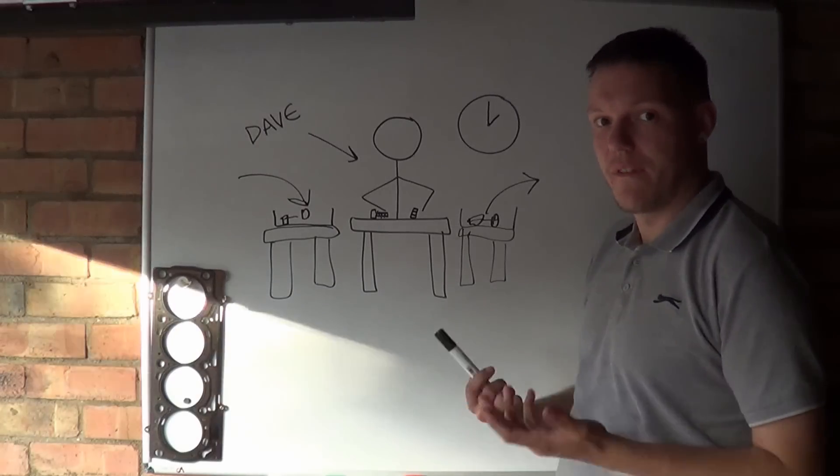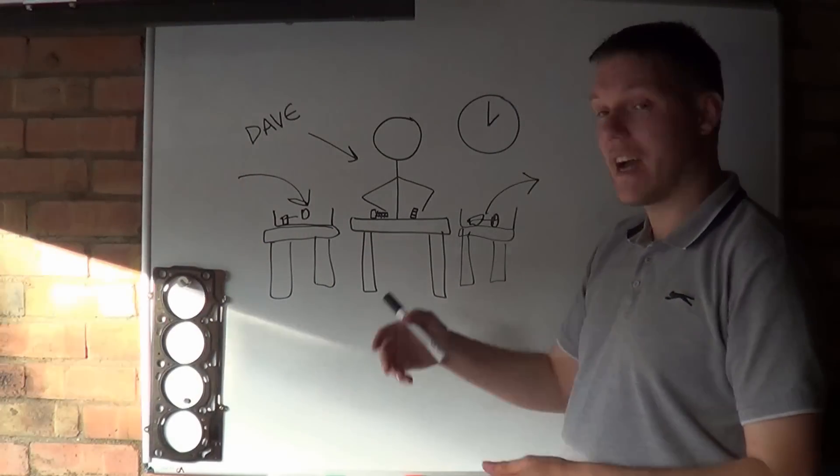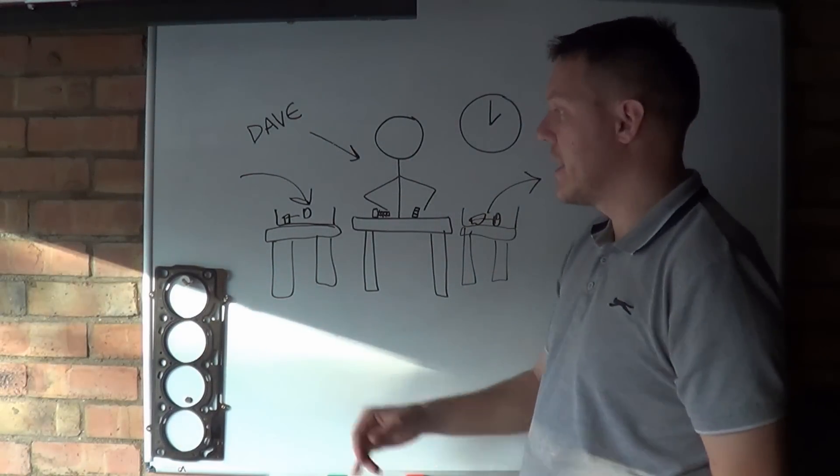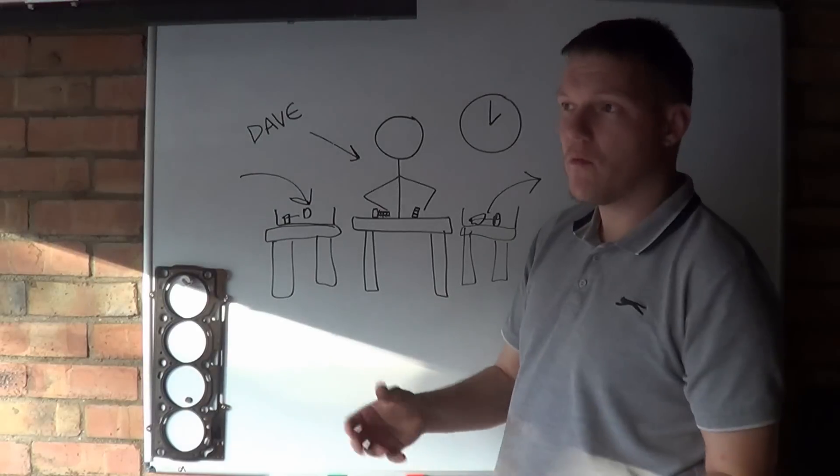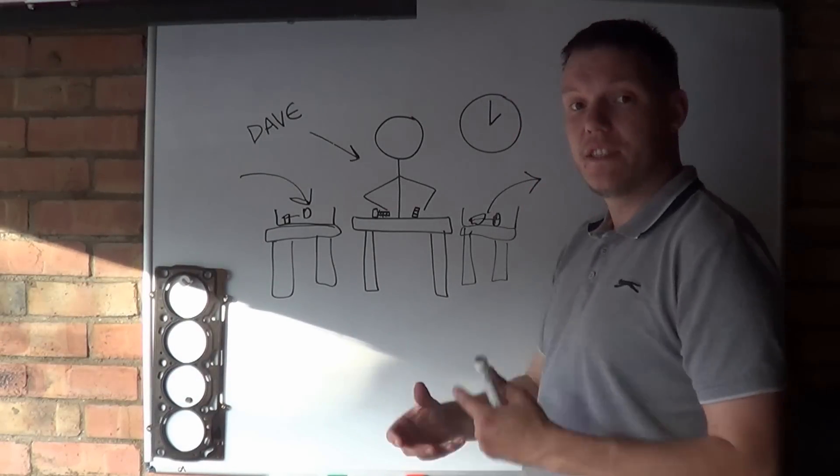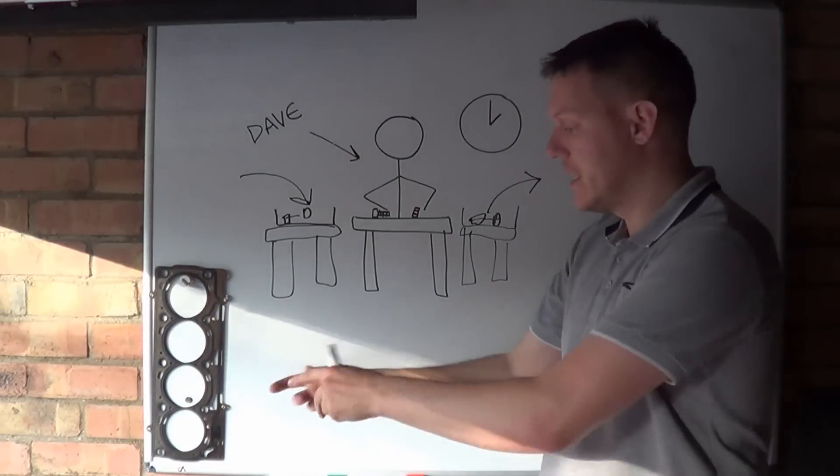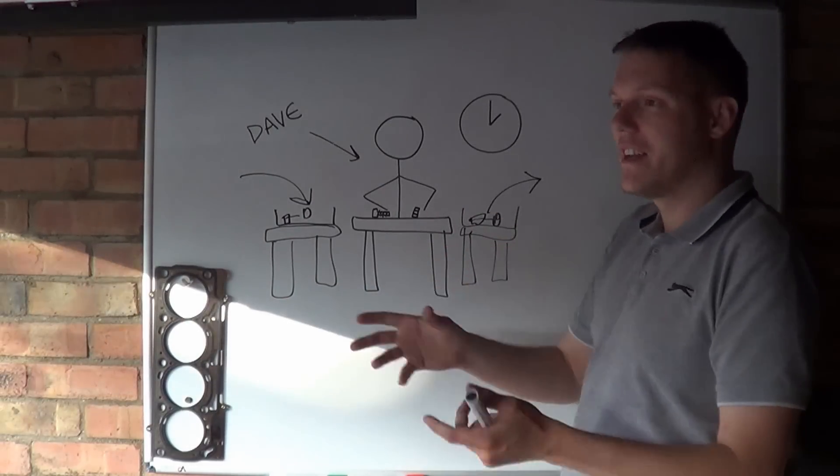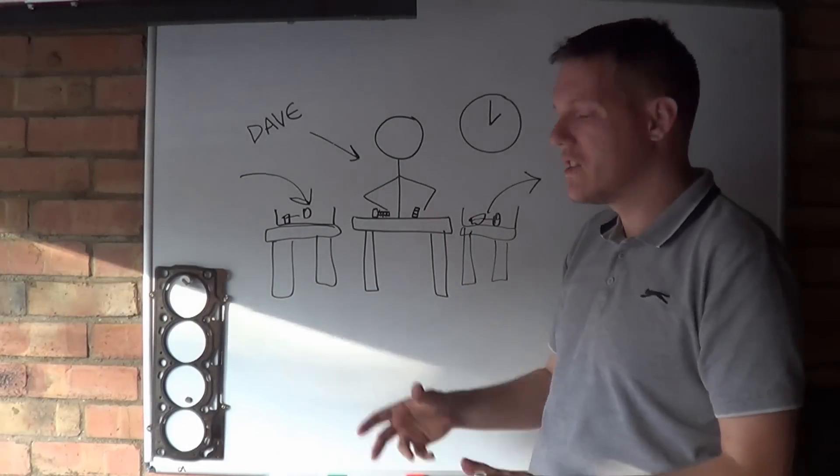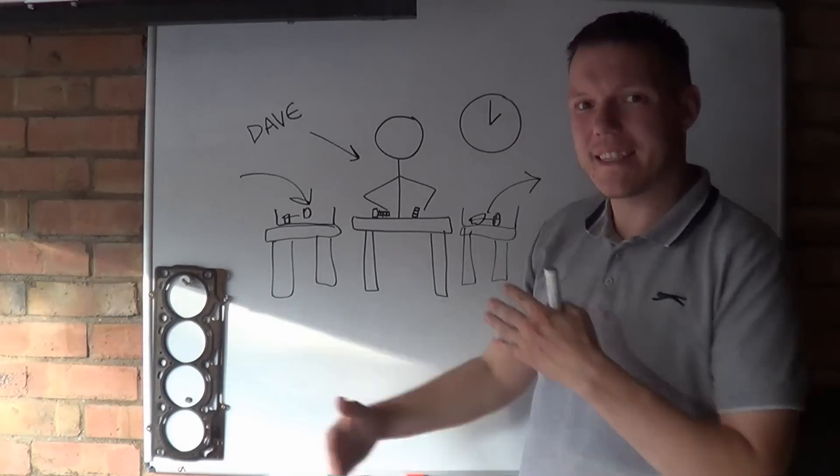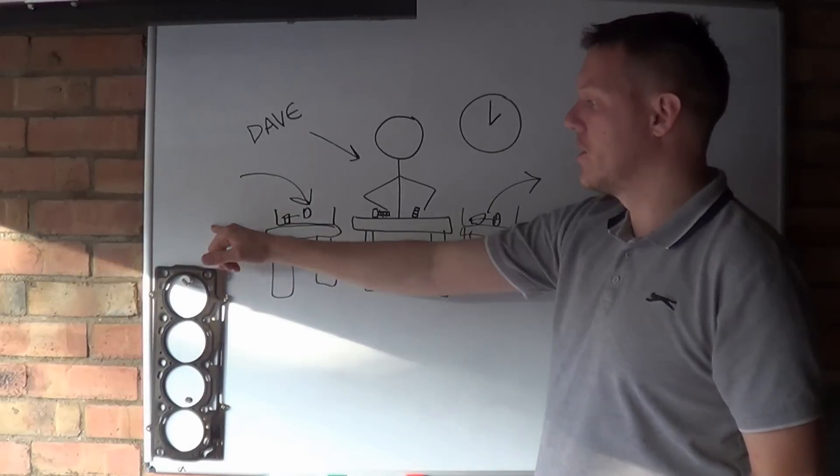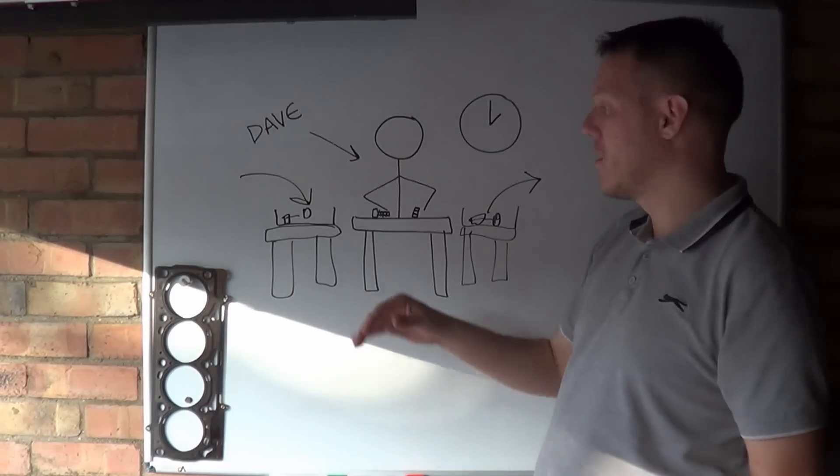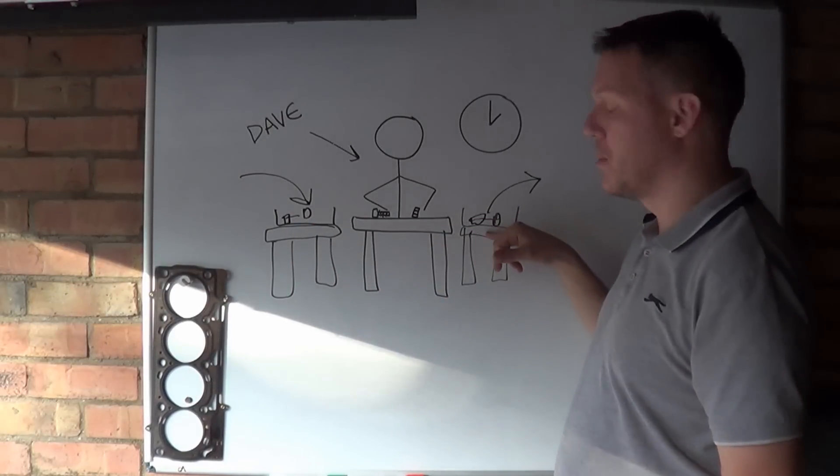Then we increase the production rate, and a bolt drops in about once every three seconds. Dave's quite content with this because he can pick up a bolt, put it in the tray, then pick up another one. He has to wait half a second, so it's quite nice. He gets a nice pace going, the input and output are flowing nicely, and every time a bolt appears, he's putting one in the tray.